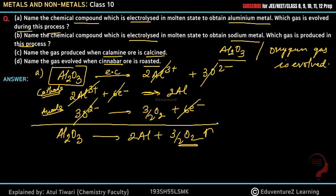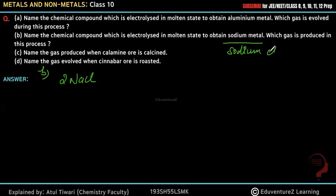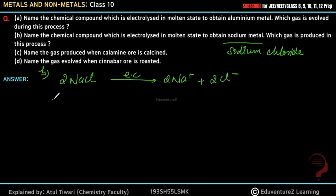Now moving to question number 2: Name the chemical compound which is electrolyzed in molten state to obtain sodium metal. The compound used here is sodium chloride (NaCl). When electric current is passed through sodium chloride, it breaks into 2Na⁺ and 2Cl⁻ ions.